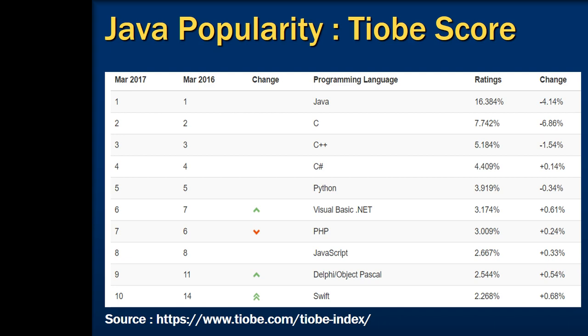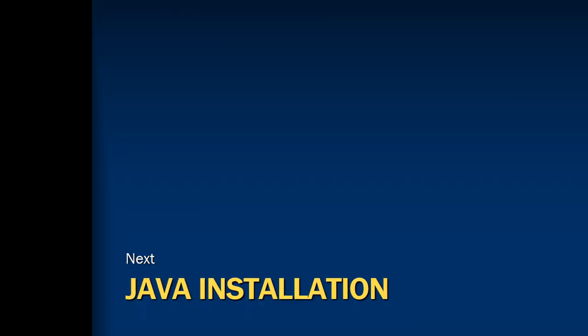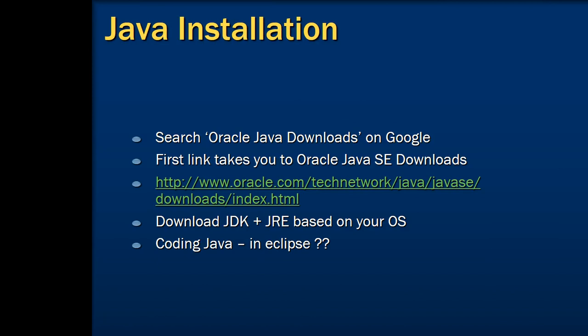Now that we know we are on the right track, we should quickly get into action and set up our environment to start programming in Java. We shall learn how to install Java on an operating system. It's pretty easy. All you have to do is go to Google and search for Oracle Java downloads. The first link will take you to the Oracle Java downloads page, where you can download the JDK and JRE based on your operating system after accepting the terms and conditions.